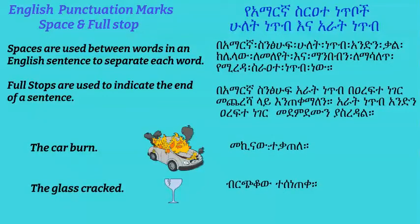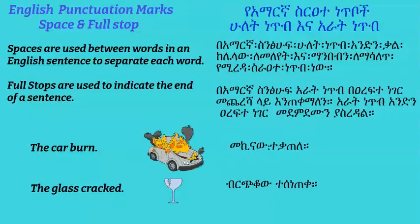In English we use space between words to separate one word from another. In Amharic we use either space for typed text, or two dots to separate one word from another. At the end of a sentence we use a dot for English, and for Amharic we use four dots.